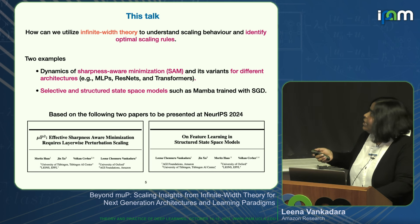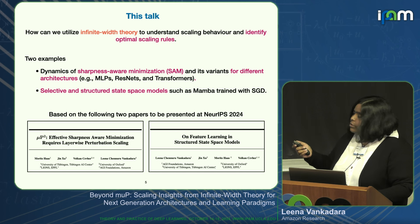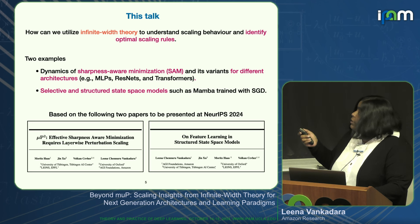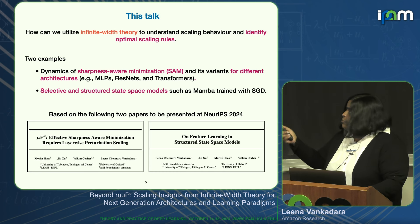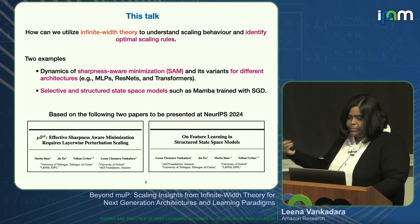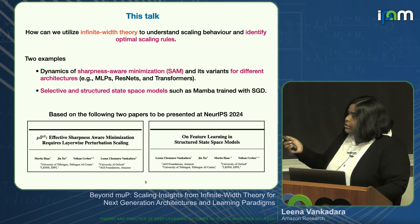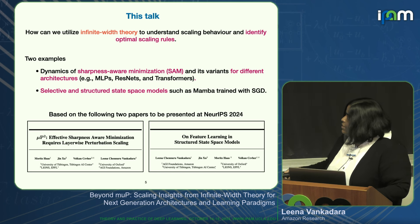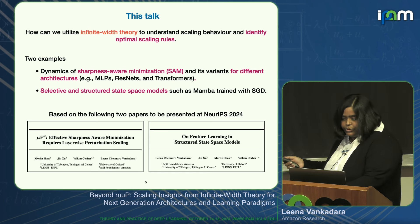In this talk, I'll discuss how we can use scaling theory—in particular infinite-width theory—to understand the scaling behavior of different designs and identify optimal scaling rules. I'll use two examples: first, I'll look at the dynamics of different variants of sharpness-aware minimization in the infinite-width limit for different architectures; then I'll talk about modern state-space models like Mamba and S4, and how they behave in the infinite-width limit when trained with SGD. Both papers are very recent and will be presented this year at NeurIPS.